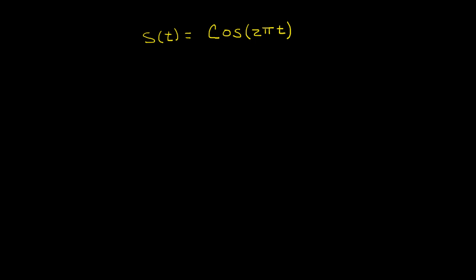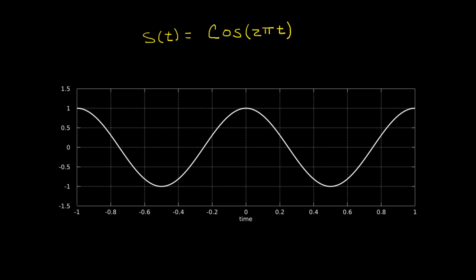The cosine of 2πt is a simple example of a sinusoidal signal. This signal attains a peak value of 1 when time is equal to 0, and attains a minimum value of negative 1 when time is equal to 1/2, or negative 1/2, and it reattains its peak value of 1 when time is equal to 1, or when time is equal to negative 1. Because the peak value is 1 and the minimum value is minus 1, we say that the amplitude of this signal is equal to 1.